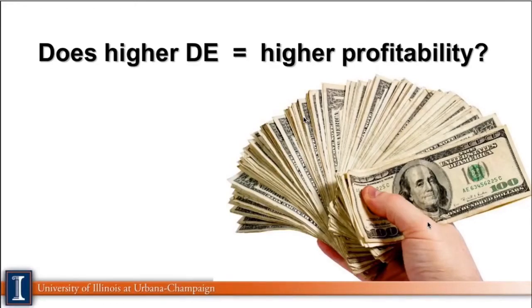You'd say, 'This is a great cow — dairy efficiency of two!' However, she's not paying the bills. You need to make money off that cow. You're going to be working on the break-even component — how much money you're getting out of that cow. We know feed costs are one of the biggest portions of cost of production, so just looking at efficiency is not enough. You need an extra step.